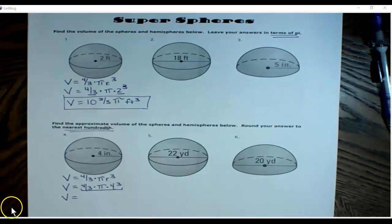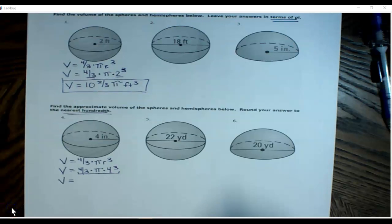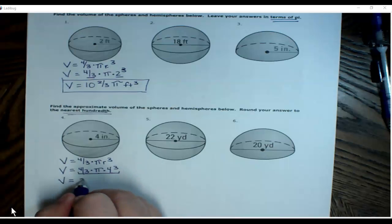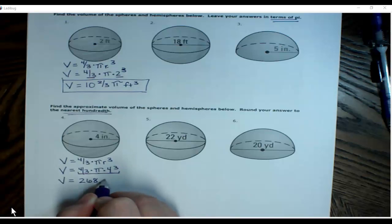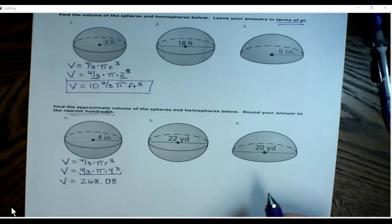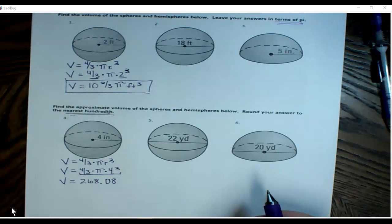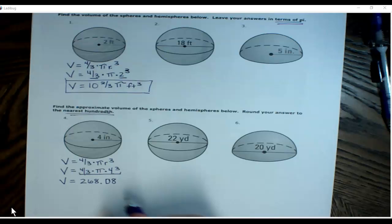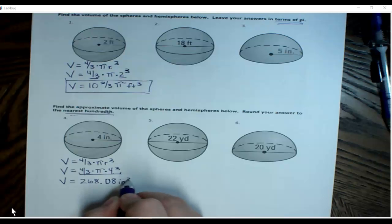Multiply those, do that now. All right, so your final answer would be 268.08. Because I got 268.082, so that two does not make the eight round up. So 268.08, my units are inches cubed.